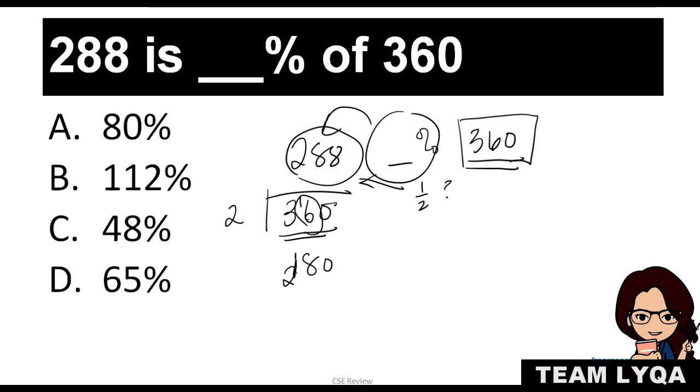Obviously, nandiyan yung 80 na nasolve na natin, pero I'm going to explain to you kung ano yung gagawin ninyo. In order for you not to compute it dun sa traditional method, instead you're just going to estimate. So ang sabi natin, 288 daw yung number. Hinahanap kung anong percent sya ng 360. Ibig sabihin, 360 yung base number mo. Ibig sabihin ng base number, ibig sabihin sya yung multiply mo yung itong percent na ito para lumabas ito.